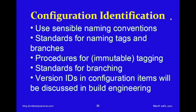Configuration identification is another one of those four terms. It has a lot to do with using sensible naming conventions, standards for naming tags and branches, and procedures for creating what are called immutable tags. Whenever you set a point in time, you've got to create a tag — or in some tools we call it a version label — and that establishes the baseline: the exact versions of each of the pieces of the code, each of the source code files, config files, documents, and everything that goes into a release.